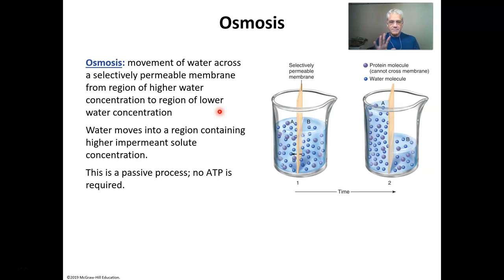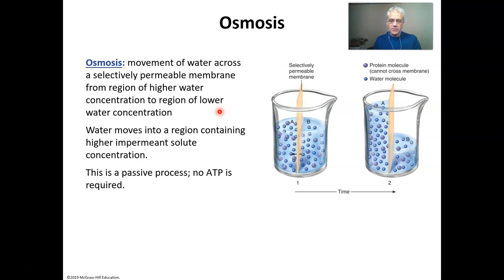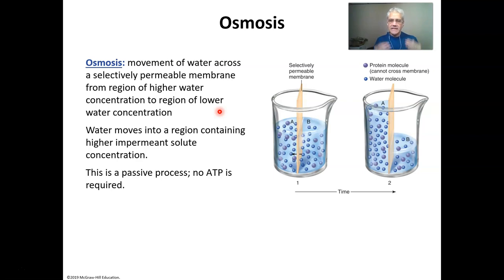The term applied to the movement of water is called osmosis. Please make the differentiation between diffusion and osmosis. Diffusion applies to the thing dissolved in the water — sugars, salts, other stuff. The water itself moving is called osmosis. This is a passive process because water can move on its own — it doesn't need ATP to move.